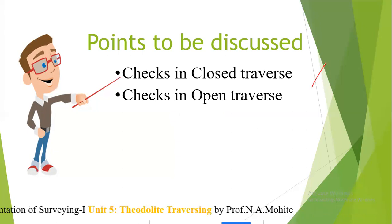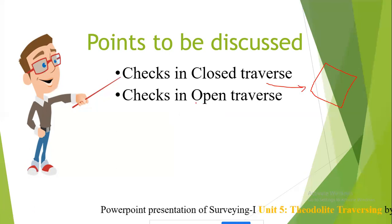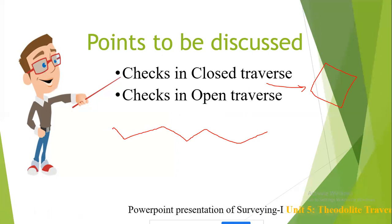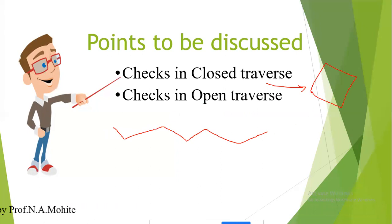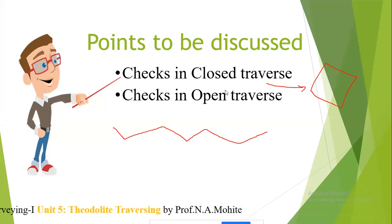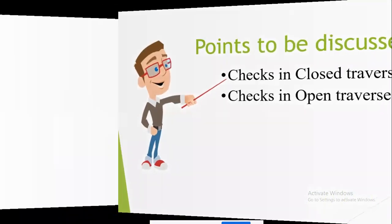A closed traverse is one in which the starting point and the end point are one and the same. In the case of an open traverse, the starting point and the end point are not the same. There are certain checks in closed and open traverses that one should know before doing calculations for the traverse. Let us see them one by one.